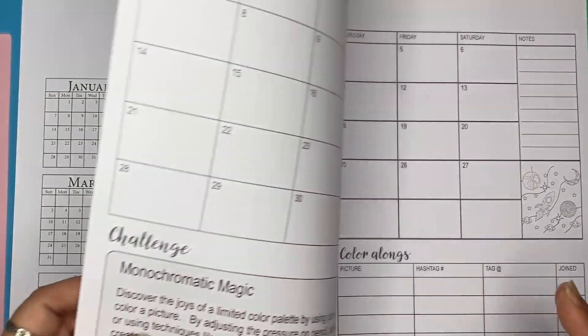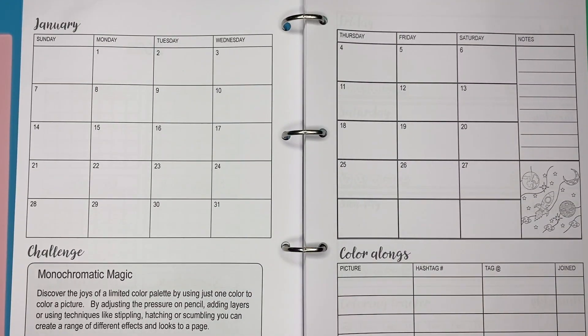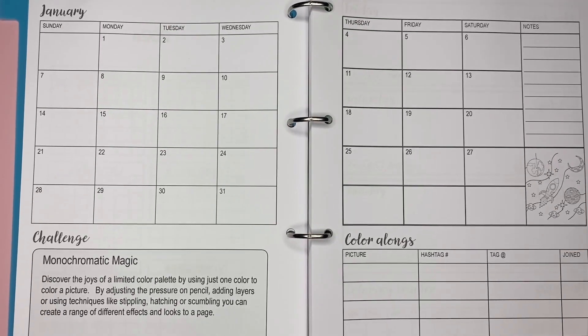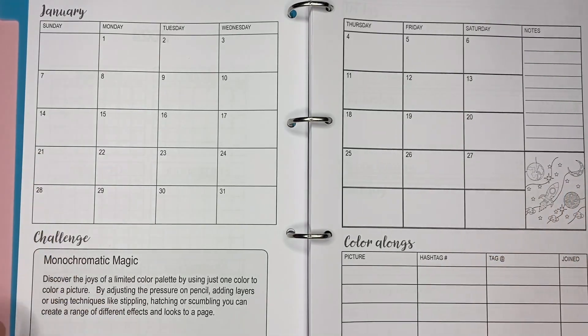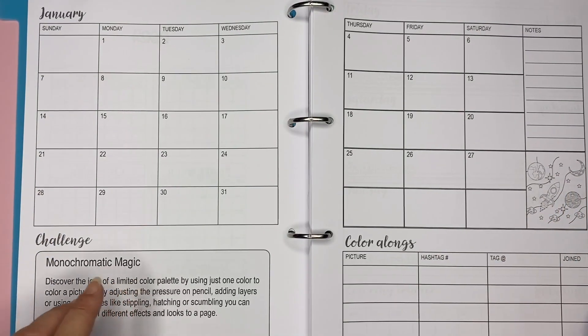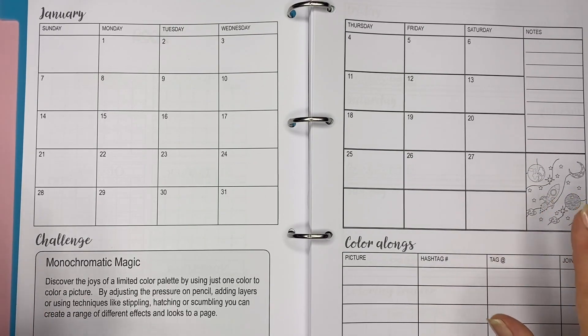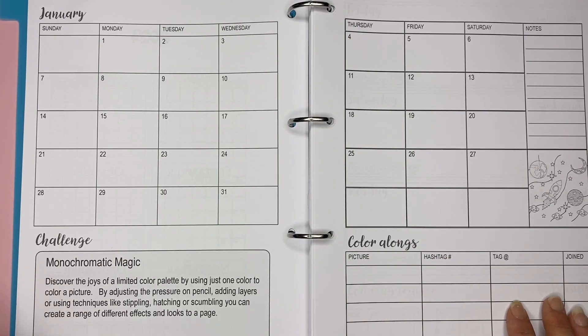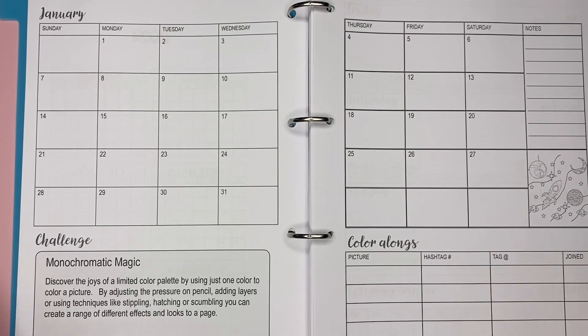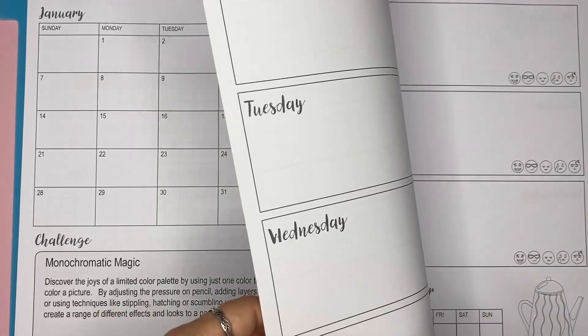So I created an organiser or a plan or a colouring log. I have a monthly spread. I have challenges there to keep my mind active and challenge myself. A little picture to colour in if I want, but no pressure because I've got heaps of colouring books that I can colour in. And I'm going to write down my colour alongs, the hashtag. If I actually joined it, I can tick these things off and feel like I've achieved something.